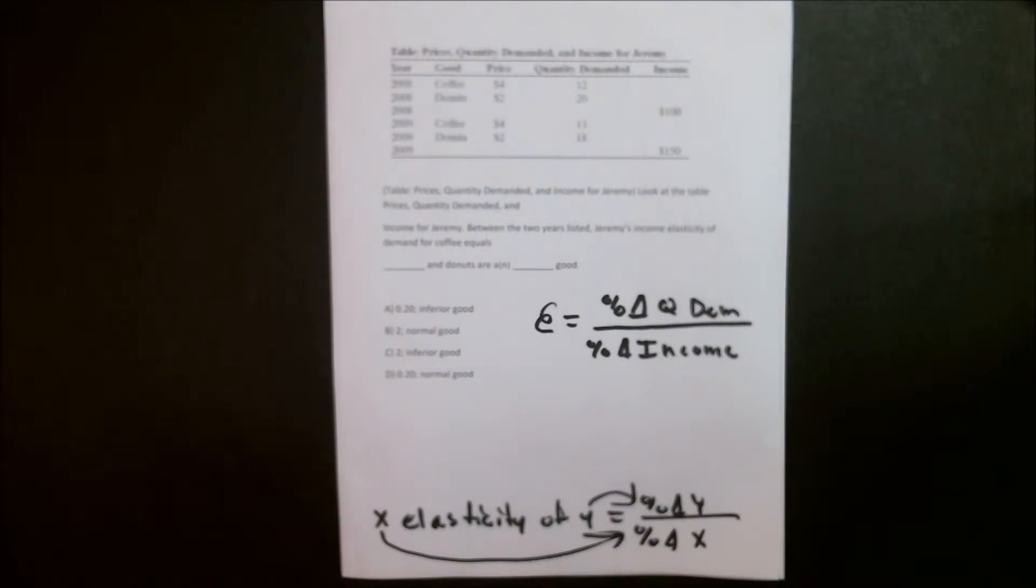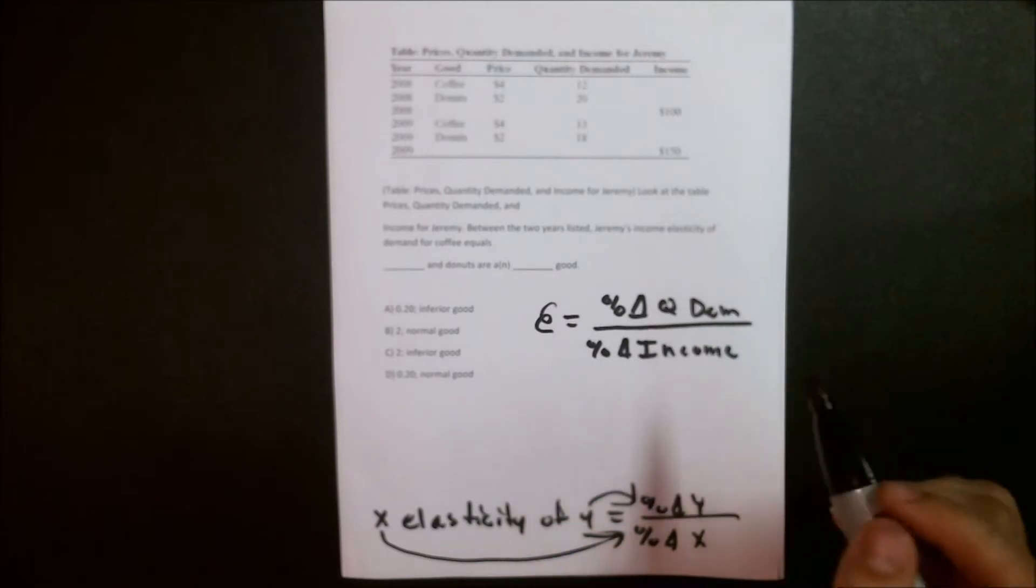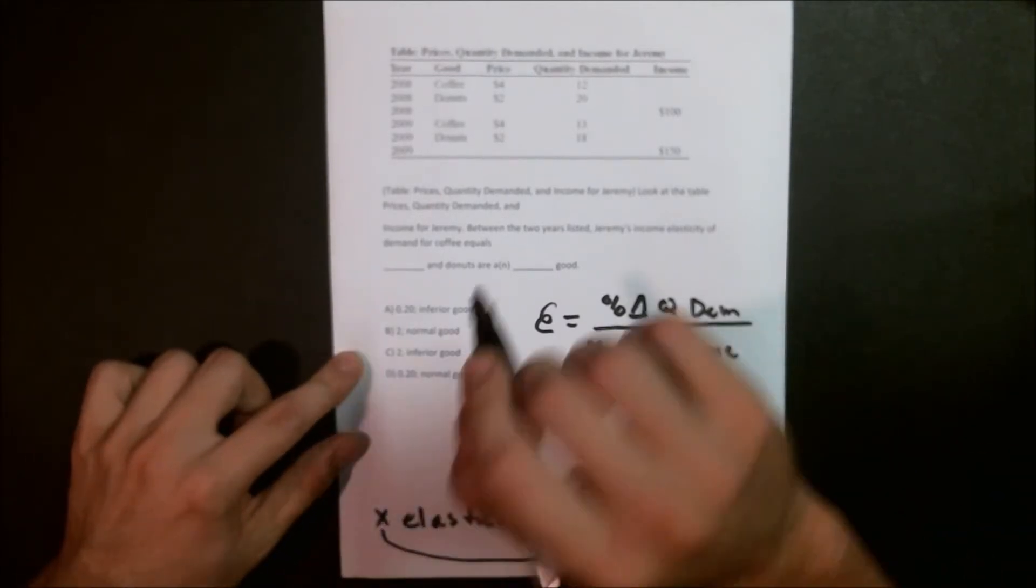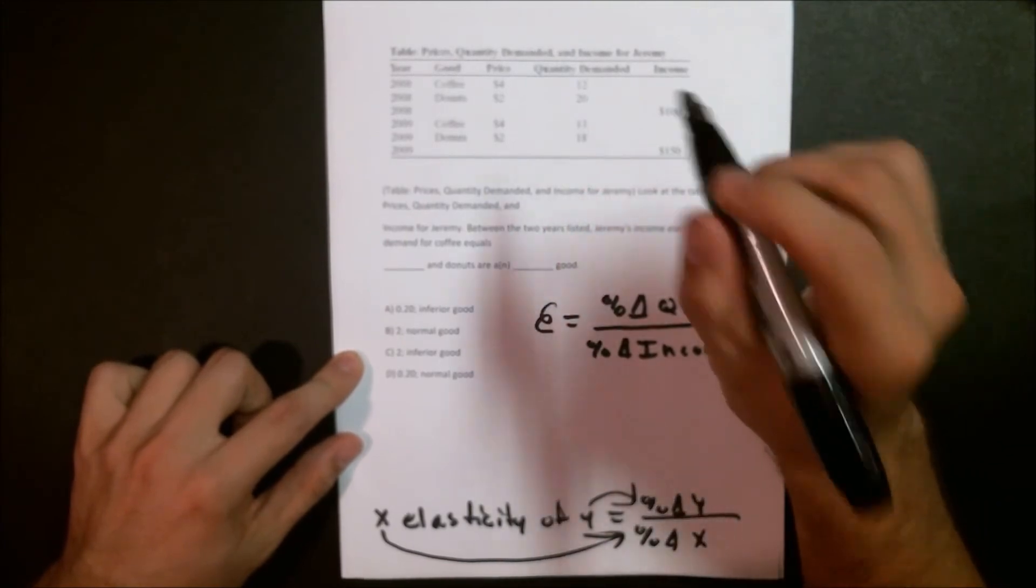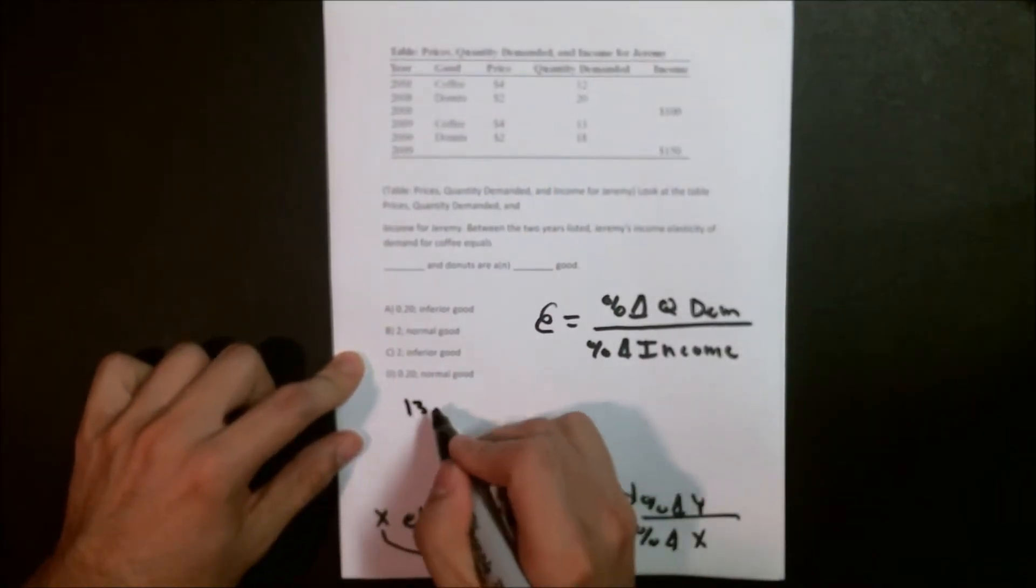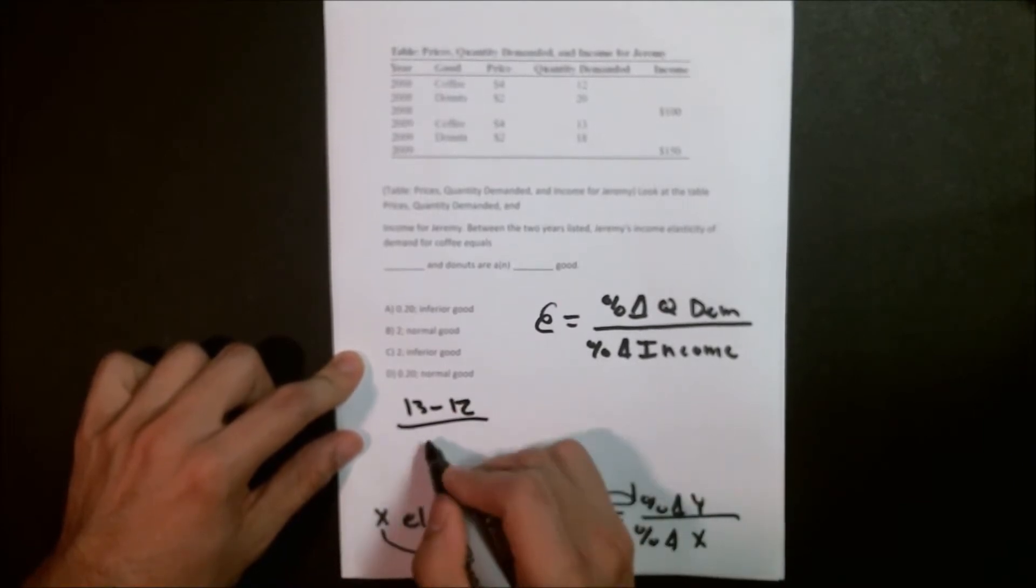In this particular case, what we're going to do is the traditional way of finding everything. We have to find the percentage change quantity demanded. First things first, how much coffee did he consume? 2008 was 12 and 13, so we're going to go 13 minus 12 over the base year.